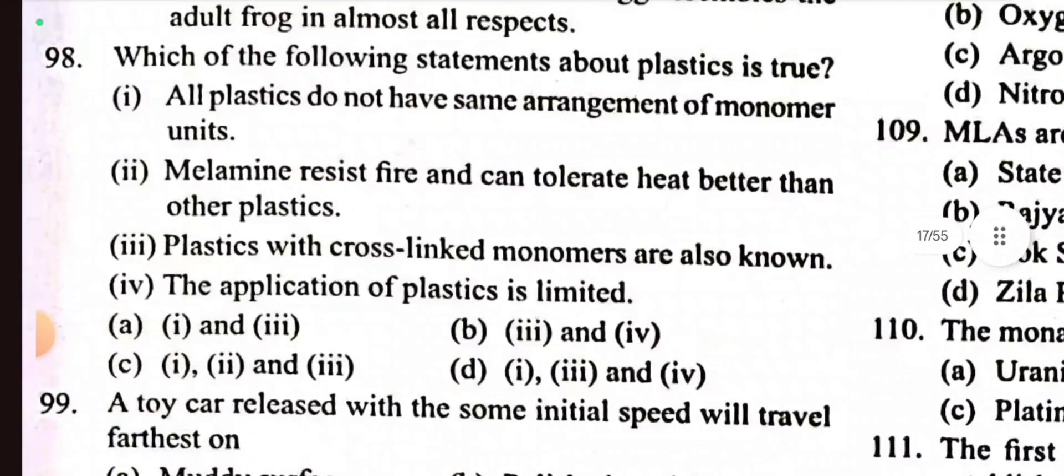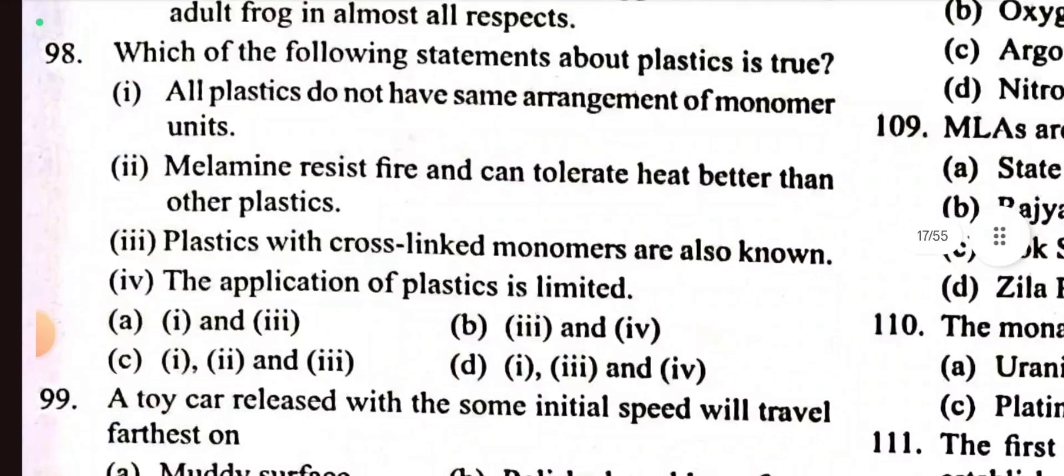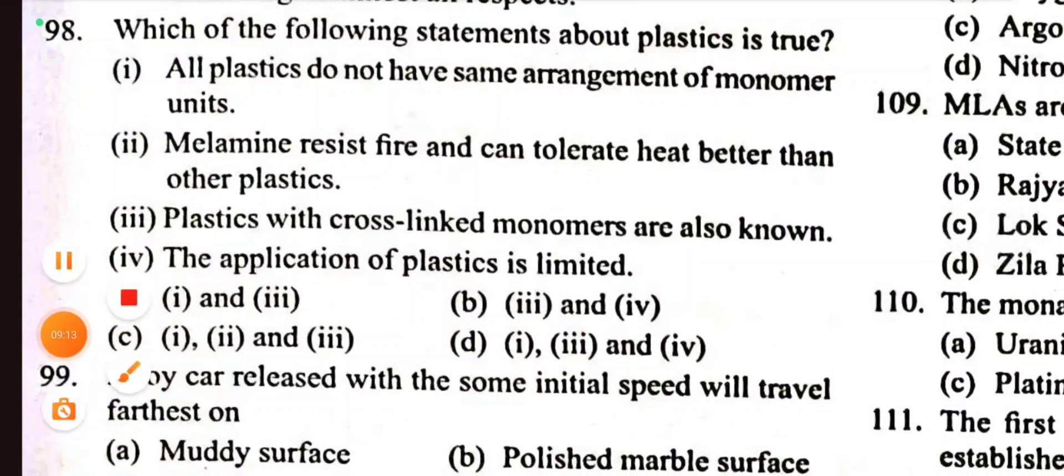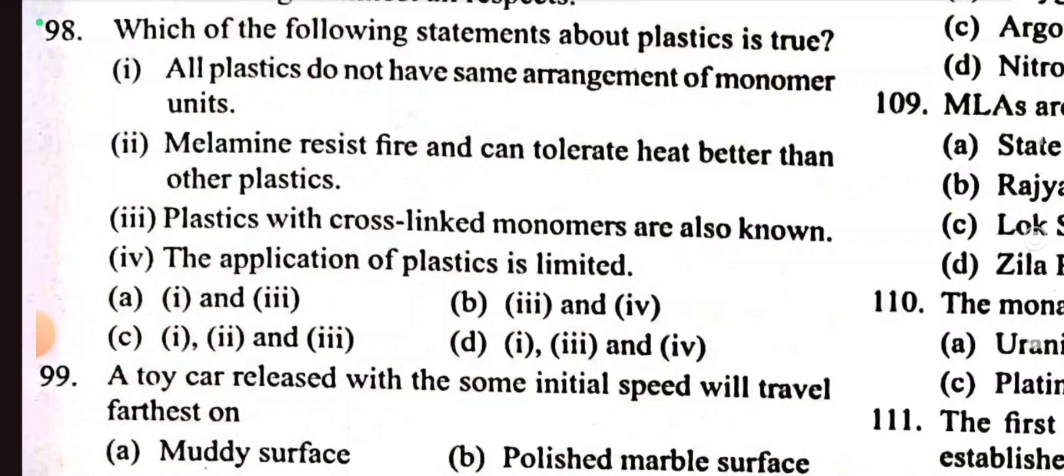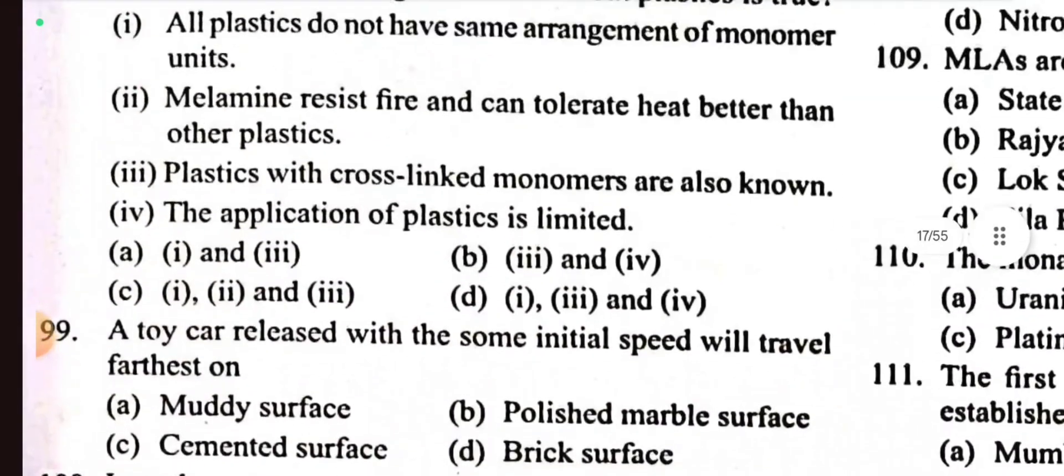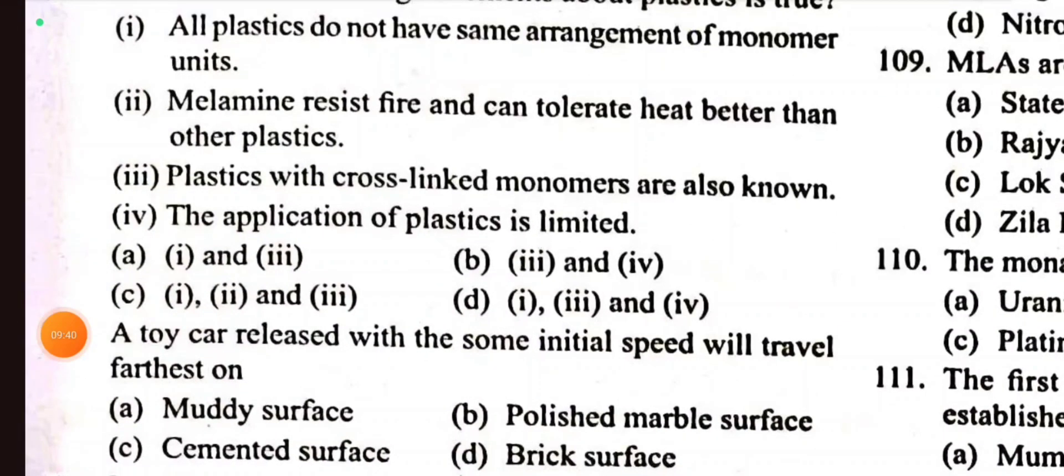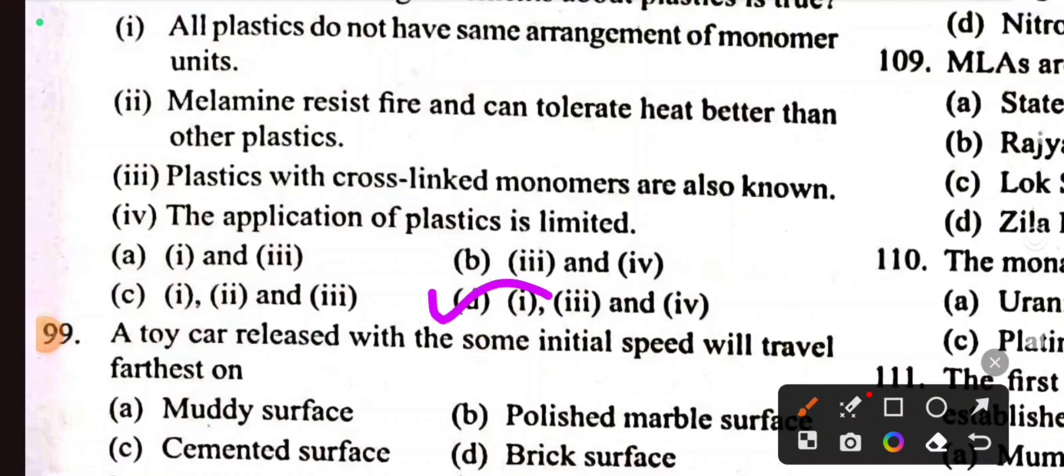Question 98: Which of the following statements about plastic is true? All plastics do not have the same arrangement of monomer units. True. Melamine resists fire and can tolerate heat better than other plastics. True. Plastics with cross-linked monomers are also known. True. The application of plastic is limited. False, it has versatile use. So options 1, 2, 3 are correct. Option D is correct.